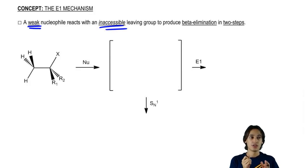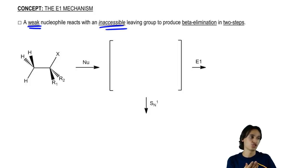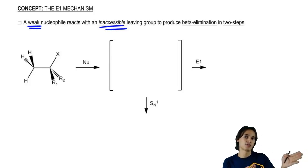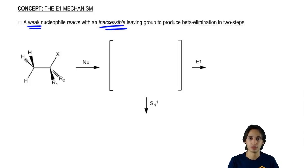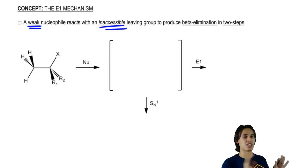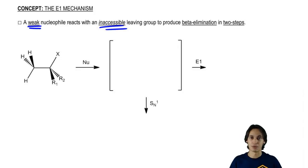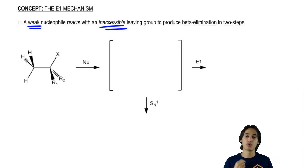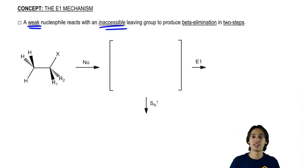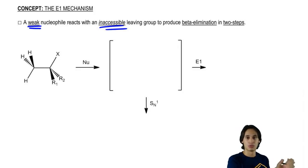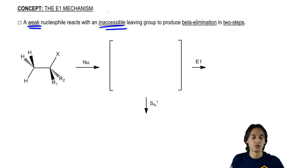Why? Because a weak nucleophile would not start the backside attack first — it would wait for something to happen. The weak nucleophile is just sitting back and waiting. The other condition is that E1 occurs with an inaccessible leaving group. Inaccessible really is just another word for tertiary.